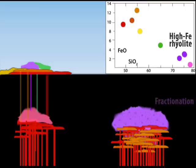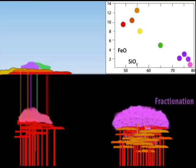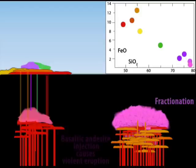As the system cools, fractional crystallization of the silicic magma reservoir develops a zone of high silica rhyolite.